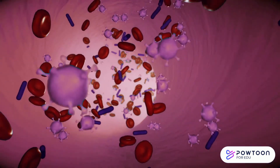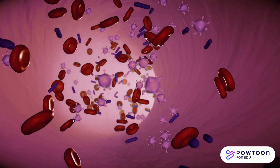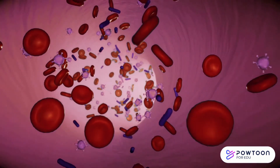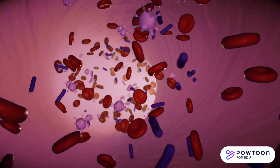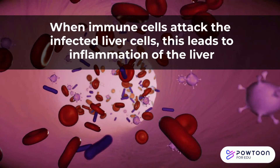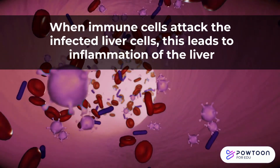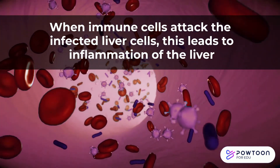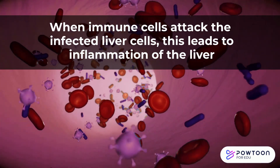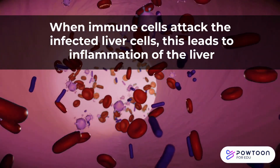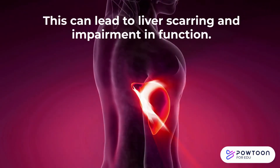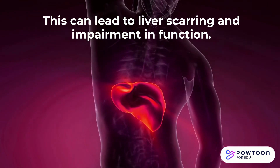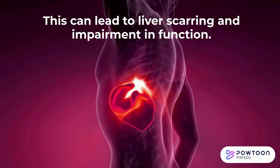In response to the virus, your body sends signals to your immune system to help fight off the viral infection. When these immune cells are recruited, they attack the virus, but they also attack the infected liver cells, which leads to their inflammation and eventually their death — this is where the disease gets its name from. Over time, scar tissue forms over the dead liver cells, which severely impacts your liver's function.